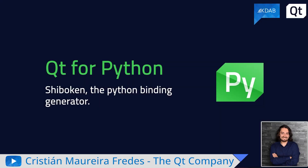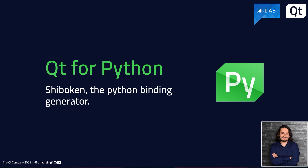In case you are familiar with Qt for Python, the project, you might have heard the word Shiboken. This is a brief introduction to Shiboken, which is a Python binding generator tool.